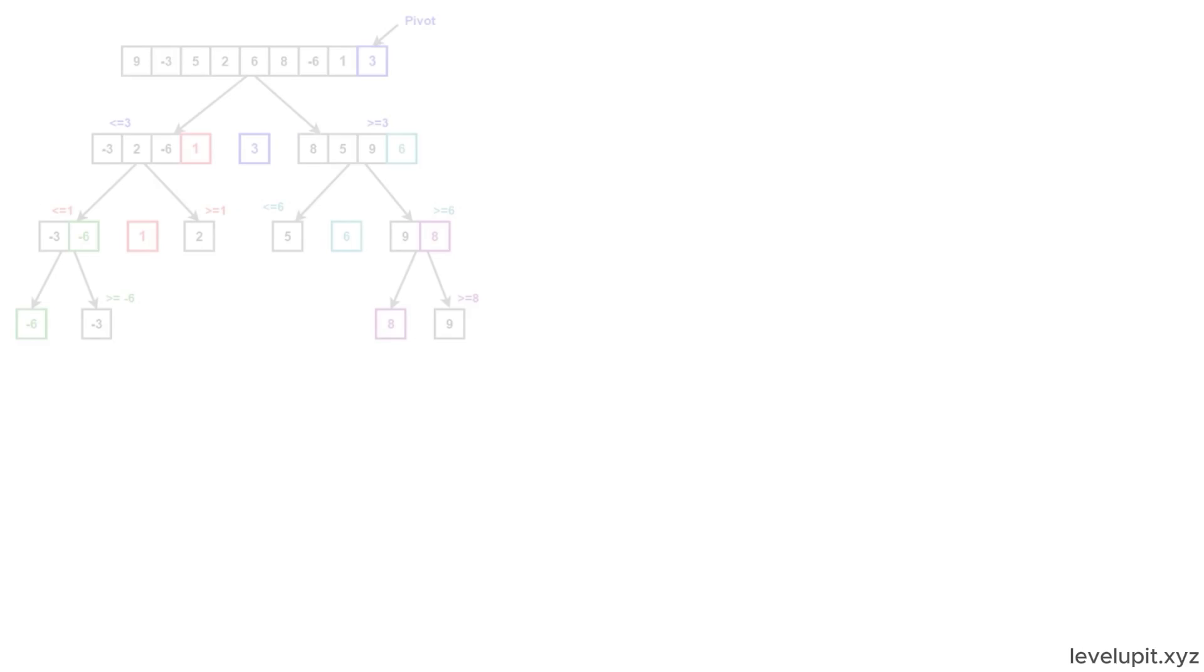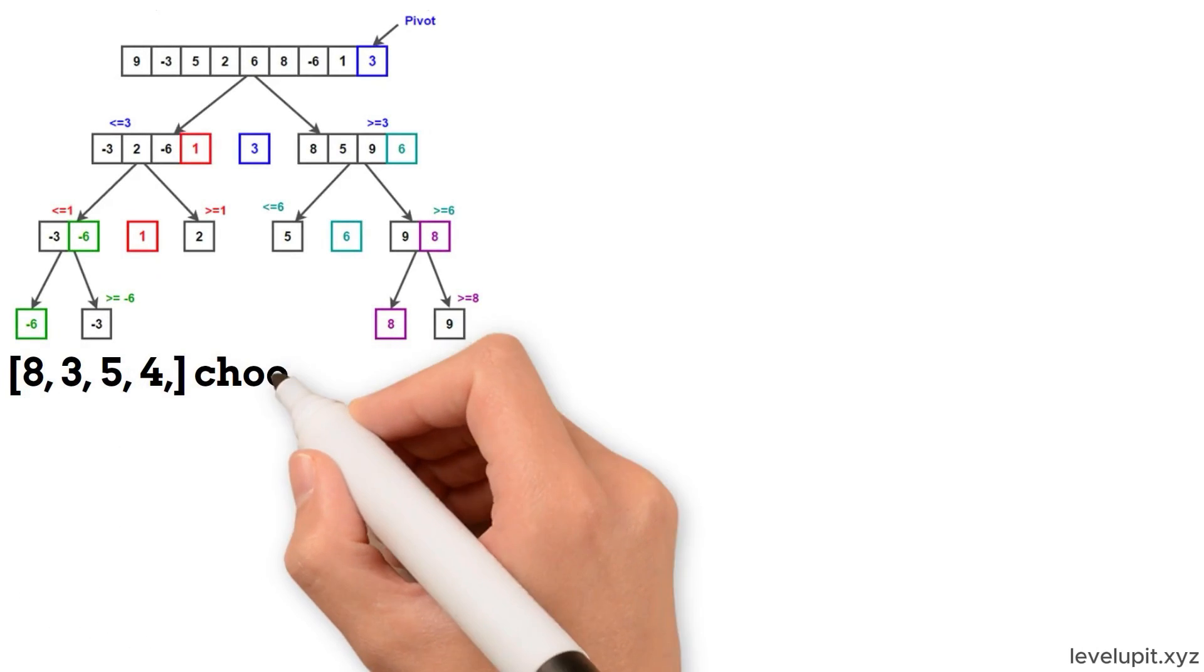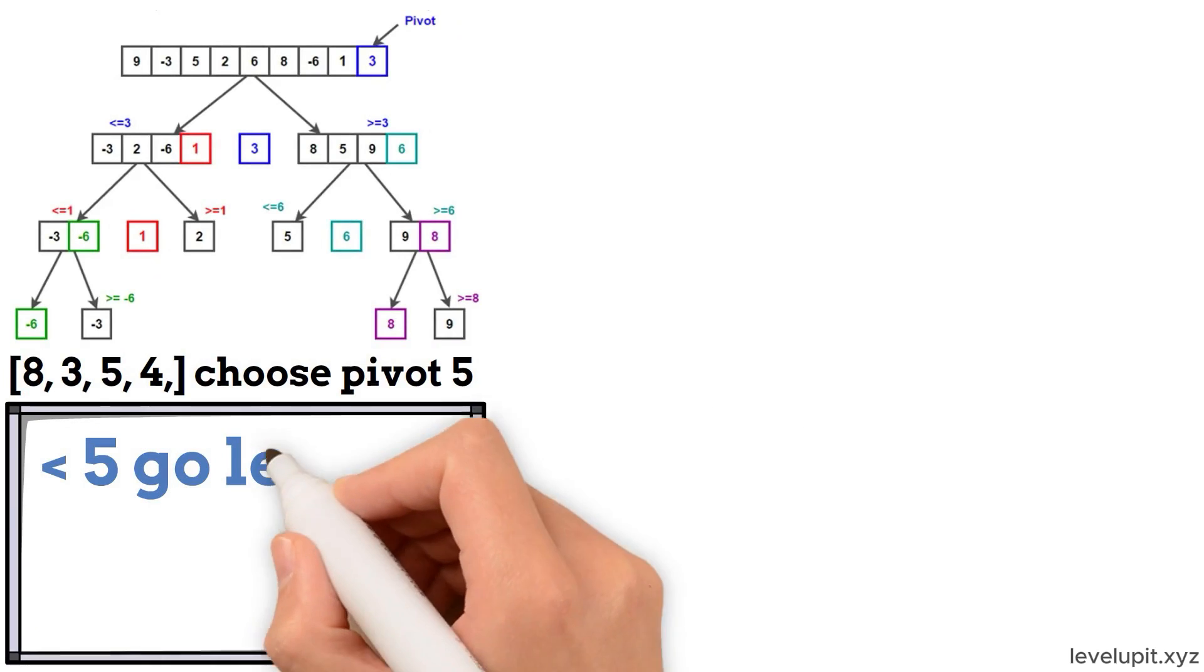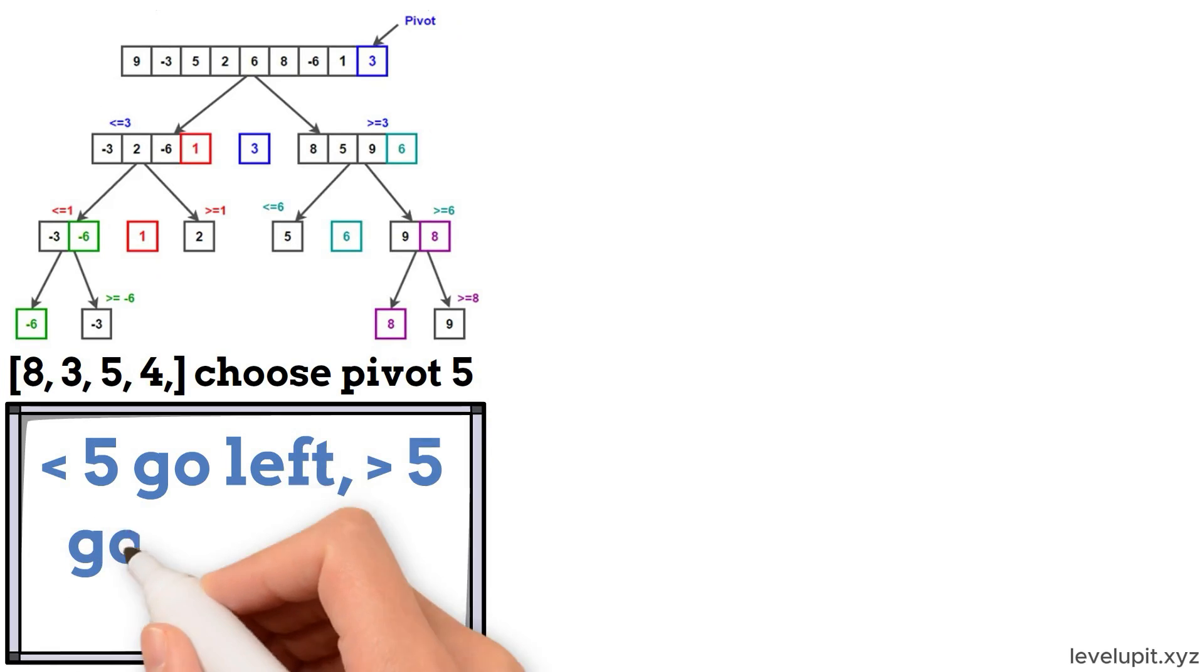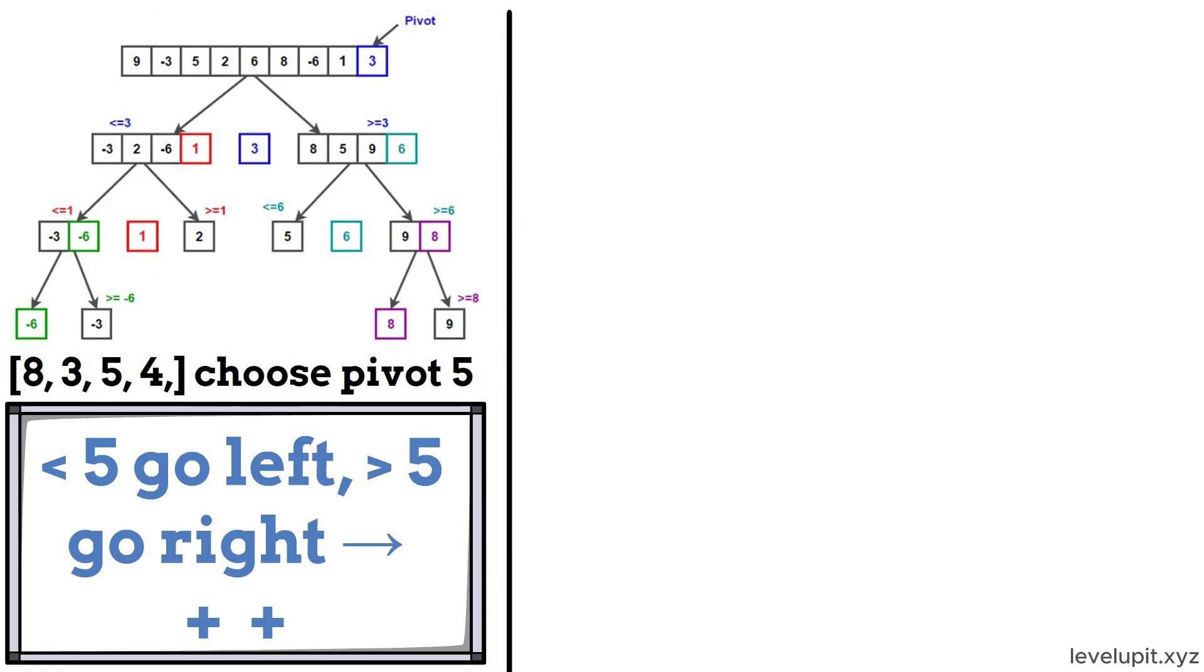Quicksort picks a pivot and partitions around it. With 8, 3, 5, 4, 7, 2, 6, 1, choose pivot 5. Partition so numbers less than 5 go left, greater than 5 go right, then combine as left plus pivot plus right. Then repeat on the left and right parts.